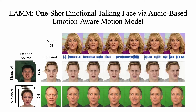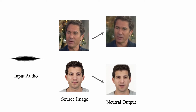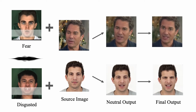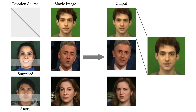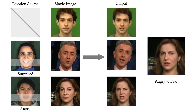We present an emotion-aware motion model to generate audio-driven emotional talking faces from a single image. Our method first renders neutral talking faces with lip motion synchronized with the input audio, then manipulates the facial expression by extracting emotion from an external source video. Our method can generate talking faces with different emotions, head poses, and smooth emotion transitions.